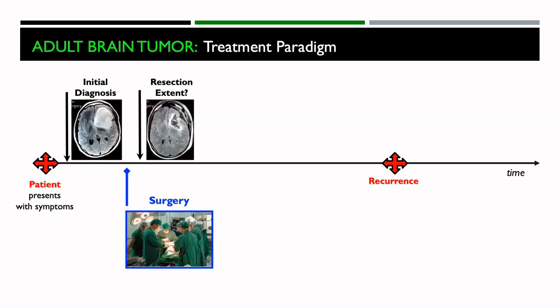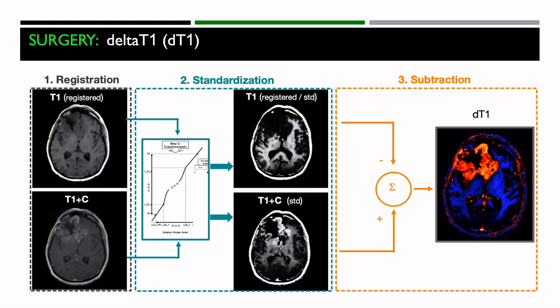Then after surgery, you want to know how much of the tumor was removed, because the more tumor you can remove, the better the outcome or the prognosis. We've developed a method to more precisely indicate that area of resection. There are some registration and mathematical algorithms we apply to get a very specialized map called a Delta T1 map that shows enhancement much better than standard imaging — specifically, it's not confounded by bright signal that you often see on the image acquired before even injecting contrast agent.